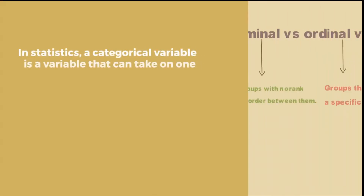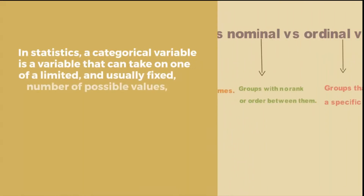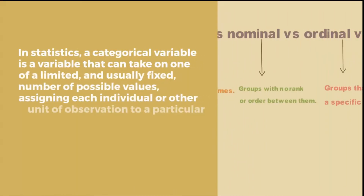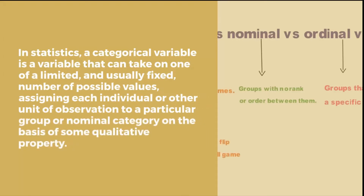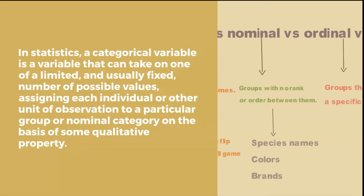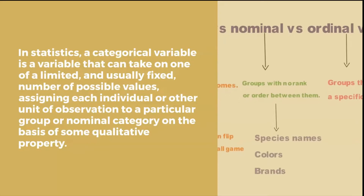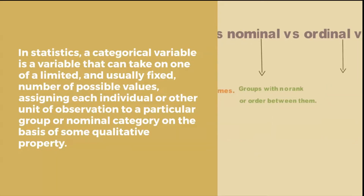What is a nominal or categorical variable? In statistics, a categorical variable is a variable that can take on one of a limited, and usually fixed, number of possible values, assigning each individual or other unit of observation to a particular group or nominal category on the basis of some qualitative property.